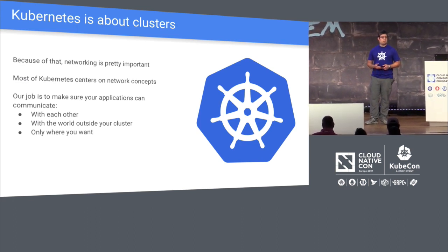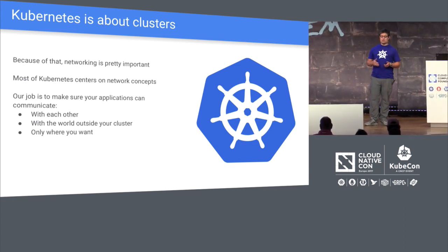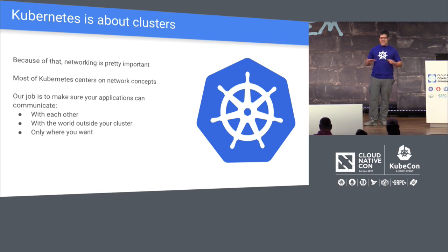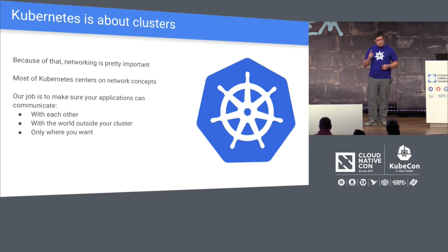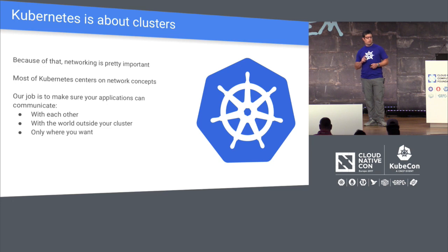Kubernetes is about clusters, and because it's about clusters, networking is pretty fundamental and important to the whole system. Our job in Kubernetes is to make sure it automatically just works, and that your applications can talk to each other. They can talk in and out of the cluster, and they can only talk when you want them to talk, and not more nor less.